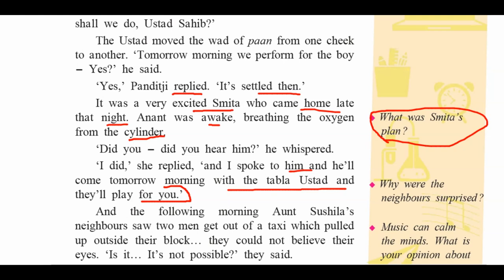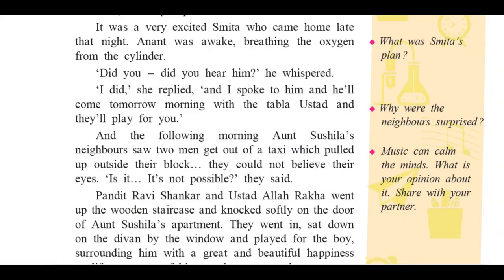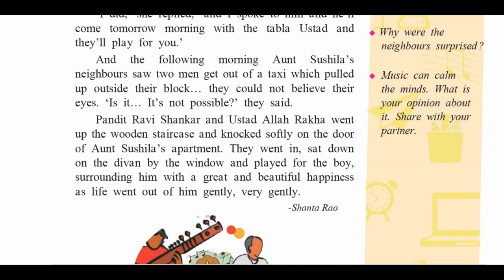The following morning, Aunt Sushila's neighbors saw two men get out of a taxi which pulled up outside their block. They could not believe their eyes — it was not possible, they said. The neighbors of Aunt Sushila were surprised. One of them was Pandit Ravi Shankar and the other was Ustad Allaraka Sahib. They went up the wooden staircase, knocked softly on the door of Aunt Sushila's apartment, went in, sat down on the divan by the window, and played for the boy — surrounding him with great and beautiful happiness as life went out of him, gently, very gently.